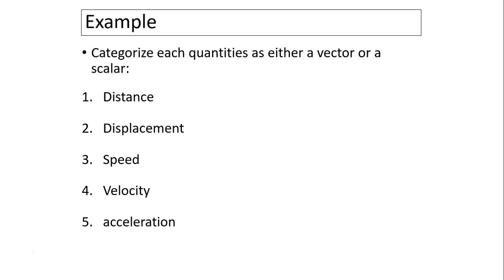We have learned previously about distance, displacement, speed, velocity, and acceleration, so this is a review. Distance is a scalar quantity, displacement is a vector quantity, speed is a scalar quantity, velocity is a vector quantity, and acceleration is a vector quantity. All vector quantities have directions; scalar quantities have only magnitude.